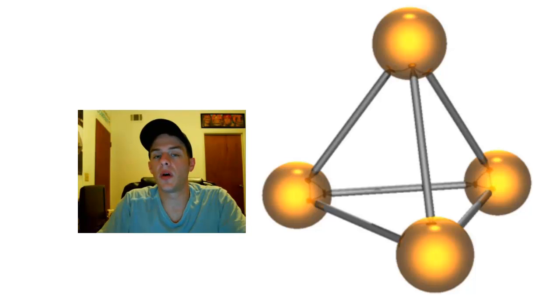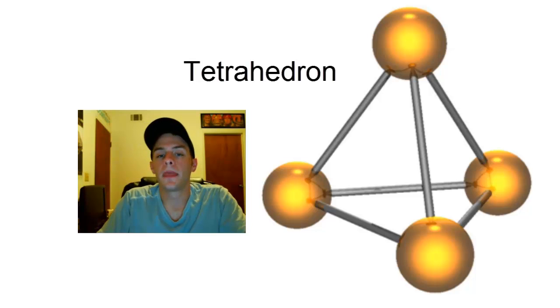And notice how these four atoms are oriented. They sit at the corners of a shape called a tetrahedron, and a tetrahedron is basically a four-sided geometric shape that has triangular faces.